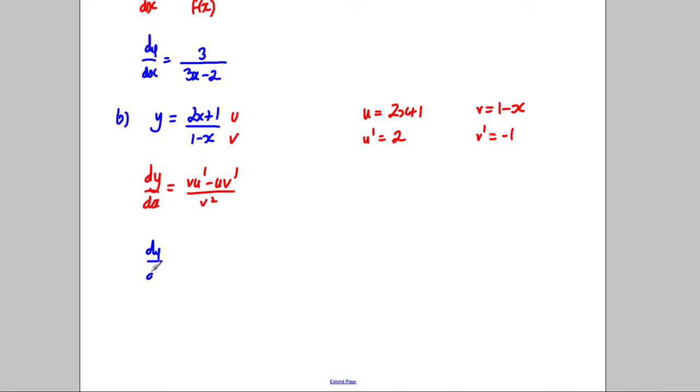So dy/dx is vu dashed. So it's these two things multiplied together. So I might try and do that straight away. So that's 2 subtract 2x. And then we're taking away these two things multiplied together, which would be negative 1 multiplied by 2x add 1. And all of that is going to be divided by v squared, which is 1 subtract x all squared. Now we can tidy up.